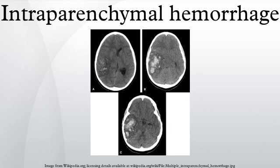Thalamus involvement may present with contralateral sensory loss, contralateral hemiparesis, gaze paresis, homonymous hemianopia, miosis, aphasia, or confusion.